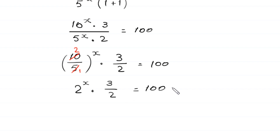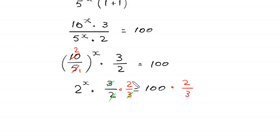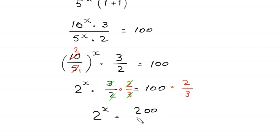Now, from here we multiply both sides of this equation by 2 over 3. On the right side, we also multiply by 2 over 3, so the 3 cancels with the 3 and the 2 cancels with the 2. At the left side, we are left with 2 to the power x is equal to 100 times 2, which is 200, divided by 3.